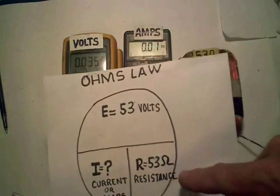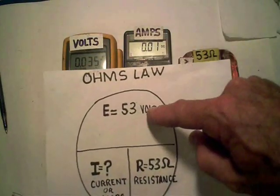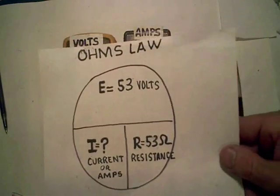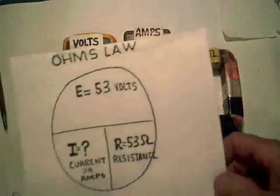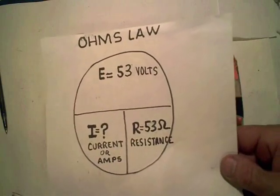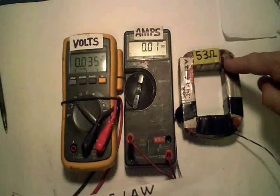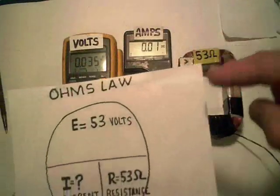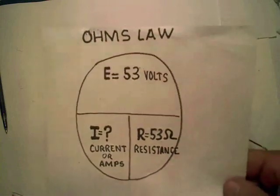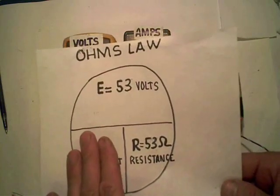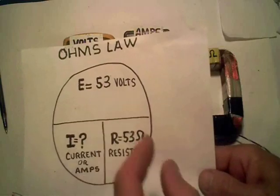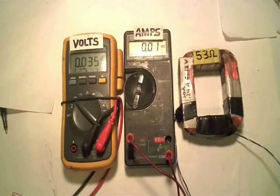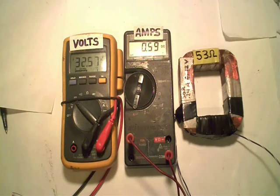I know that if I apply a certain voltage, I can pre-calculate how much current is going to flow through my coil of wire, or my inductor. For example, I'm going to raise the voltage here to 53 volts. Based on Ohm's law, exactly one amp of current should flow into this coil, because to find the current flowing through the coil, you divide the resistance into the voltage. So I'm applying direct current, and as soon as I reach 53 volts, you should see about one amp of current flowing into that coil.